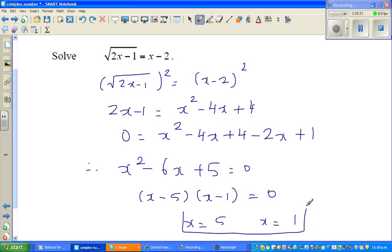Now which of them is acceptable? If you put 5 here, it does work. 2 times 5 is 10, so it's a positive number. Let us check: if x is 5, the left hand side would become square root of 10 minus 1, which is 9, which is 3 (plus or minus 3). Your right hand side becomes 5 minus 2, which is 3. So this does work.